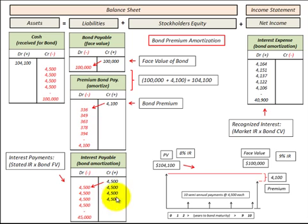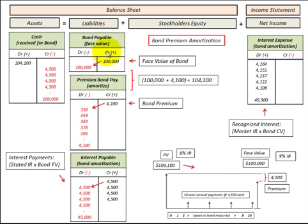We also have the semi-annual interest payments we have to pay on the bond. We record those by increasing our Interest Payable at the stated rate of interest times the bond's face value. Then we have Interest Expense, which is what we include on the income statement. That's based on the market rate of interest times the bond's carrying value, where the carrying value is the Bonds Payable amount plus the remaining Premium on Bonds Payable. The premium becomes a balancing account between the cash received, the Bonds Payable, the Interest Payable, and the Interest Expense.